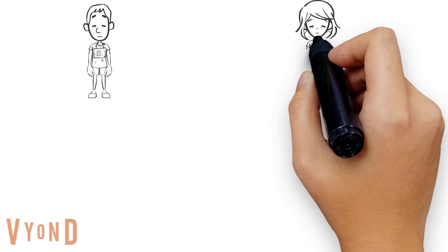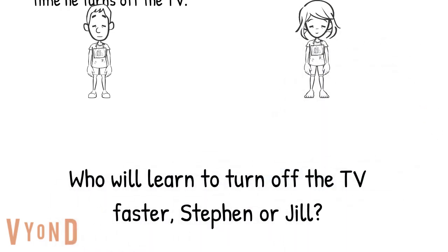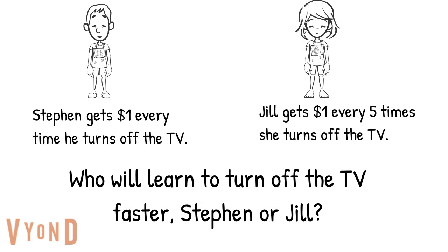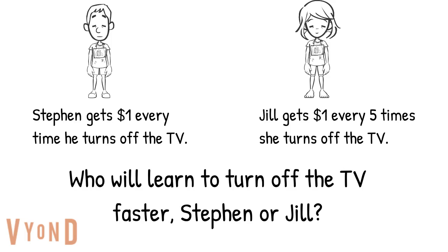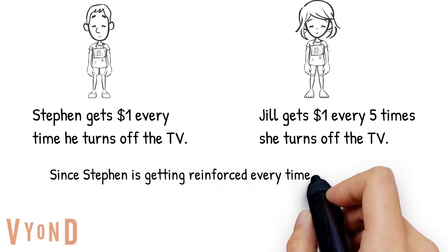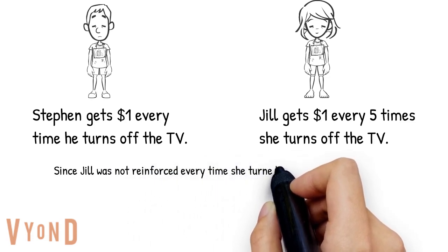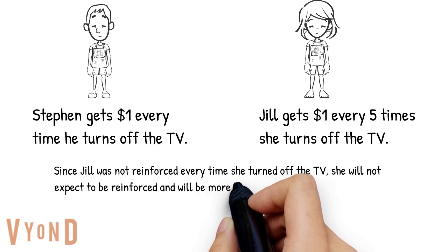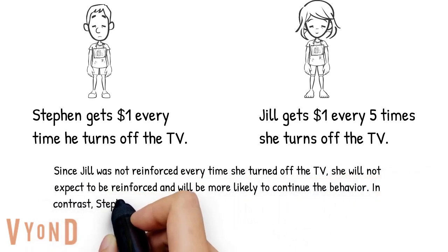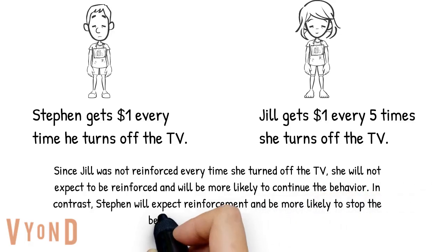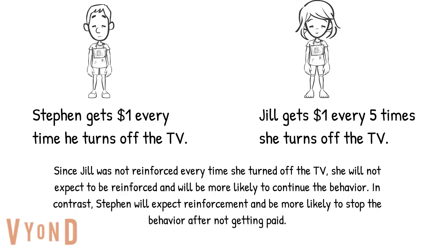Let's assume Steven has a fraternal twin named Jill who also has problems turning off the TV. Steven gets reinforced a dollar every time he turns off the TV, and Jill gets reinforced a dollar every five times she turns off the TV. Steven will learn to turn off the TV faster. However, once Brian decides to stop paying them, Jill will not expect to be reinforced every time and will likely continue the behavior a little longer after she stops getting paid, whereas Steven will expect it every time and will be more likely to stop the behavior.